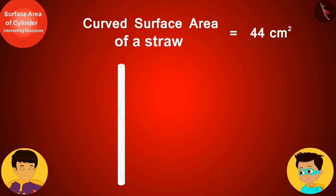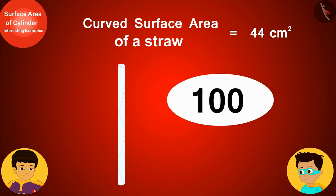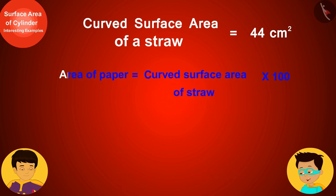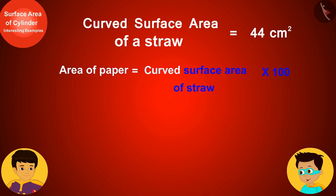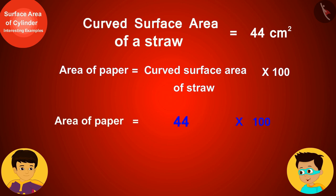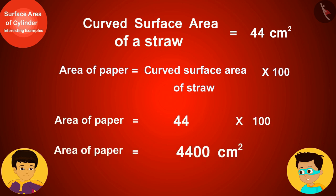And we have to make 100 such straws. This means that the area of the paper we need will be the curved surface area of a straw multiplied by 100. We need 44 times 100 or 4400 square centimeters of paper.